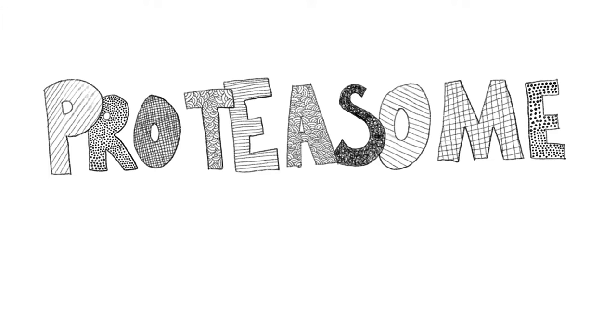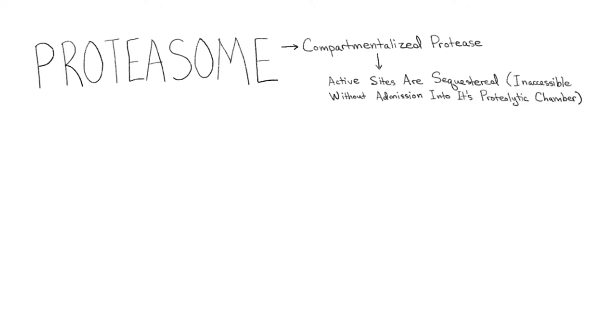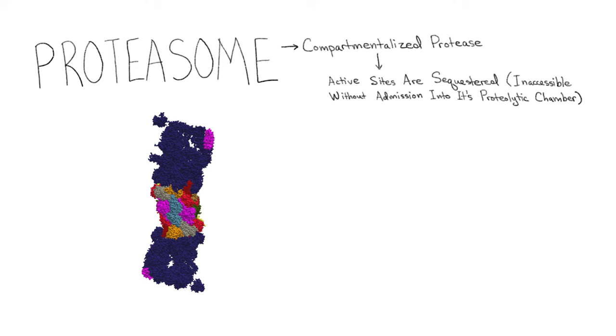Now that we see how ubiquitin is attached to proteins, let's discuss the proteasome. The proteasome is a compartmentalized protease whose active sites are sequestered, or inaccessible without admission into its proteolytic chamber. The proteasome consists of three compartments which give the proteasome two external cavities and the proteolytic chamber.